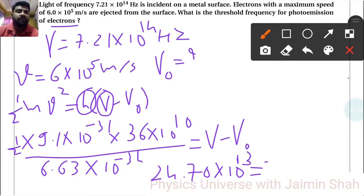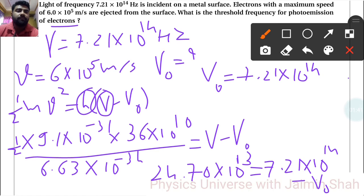ν is given as 7.21 × 10¹⁴ minus ν₀. So ν₀ rearranged: 7.21 × 10¹⁴ minus 24.70 × 10⁻¹³, which gives 4.47... I'm writing the answer here.